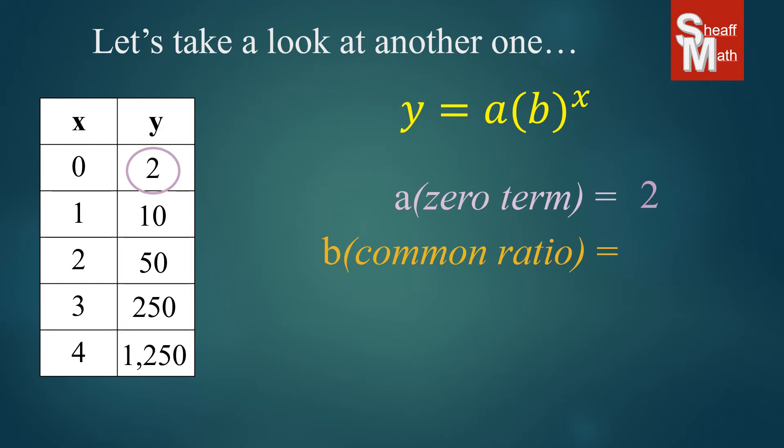Now we are going to find the common ratio. We take a number and divide it by the one before it. 10 divided by 2 is 5. 50 divided by 10 is 5. 250 divided by 50 is 5. And so on.